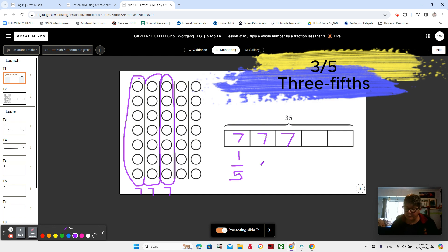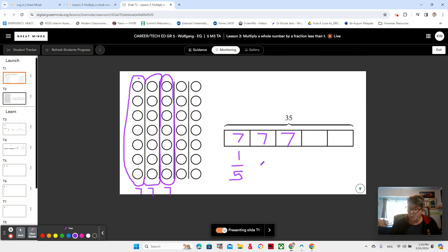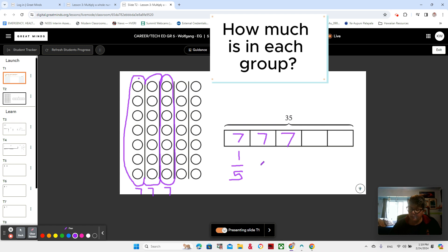Each time we find a fraction of a set or a whole number, we think about how much is in each group. How can we find the number efficiently? If we have a lot of groups, like here we have three groups and there's seven in each group, right?